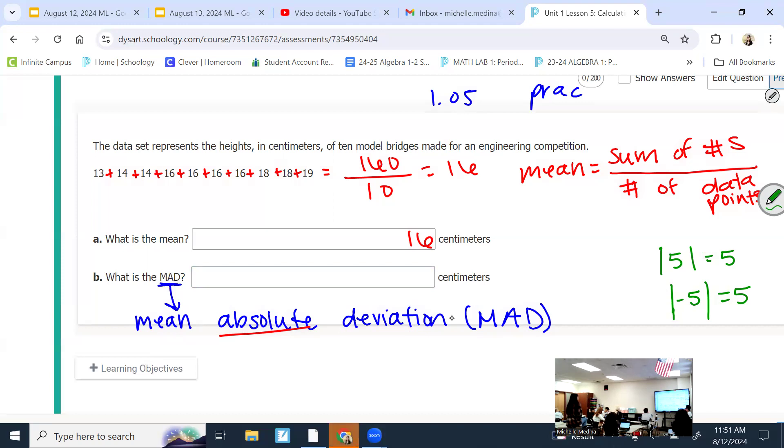Mean, absolute, and deviation. We want to figure out how far away each data point is from the mean. I'm going to put absolute deviation here. And tell me how far away is 13 from our mean? 16. Three. Not negative 3. That's what we mean by absolute. We're just counting and keeping track of how far away from the mean. It's 3 away from 16. How far away is 14 away from the mean? And we have 2 fourteens twice. How far away is 16 from 16? Good. How far away is 18 from 16? And how far away is 19 from 16? So, that's our absolute deviation.